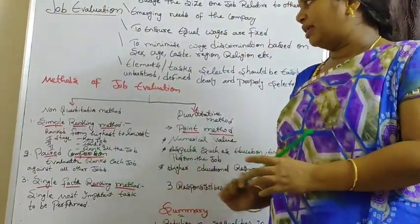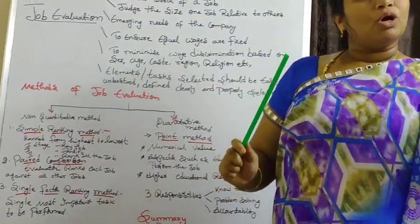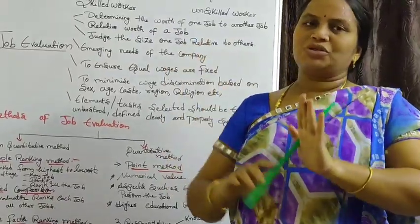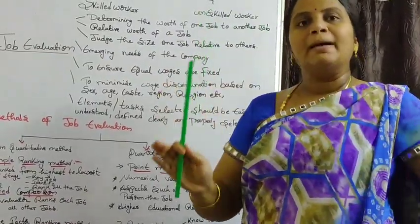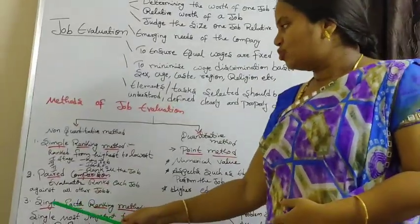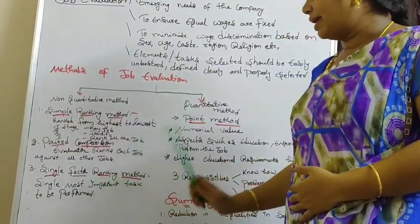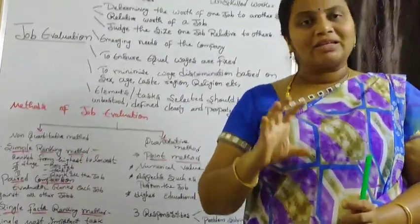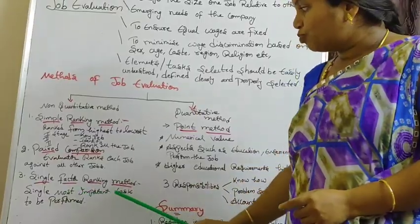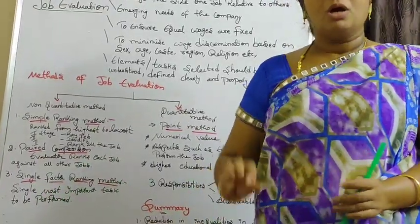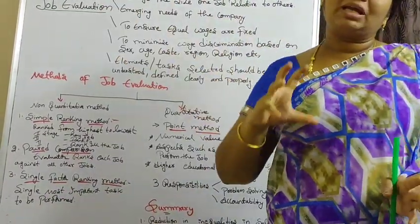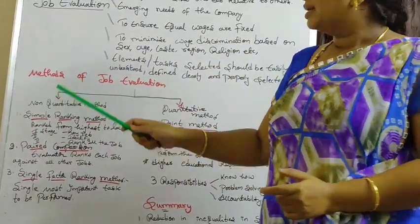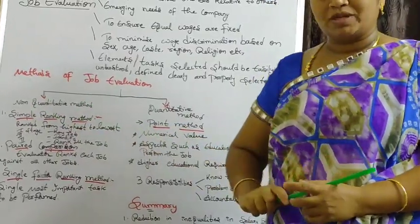The next non-quantitative method is paired comparison. Paired comparison means one job has a different salary structure and another job has a different salary structure — you have to do the paired comparison. Next is the single factor ranking method: one job has only one single factor that must be understood. Only one person is capable of performing that task, so you have to be paid according to the situation. That is the non-quantitative method.